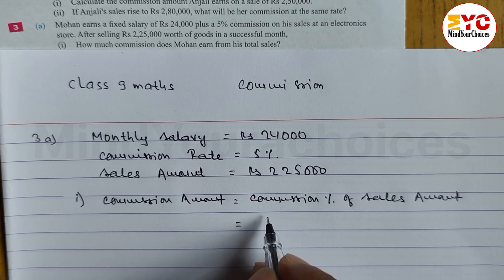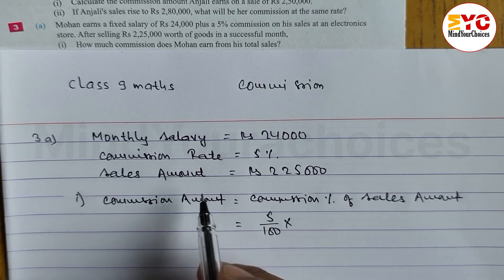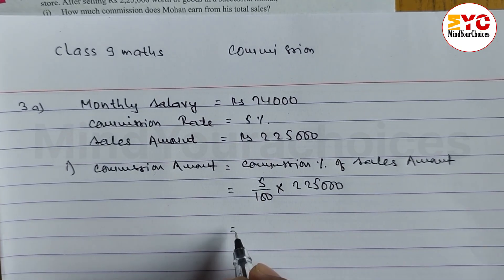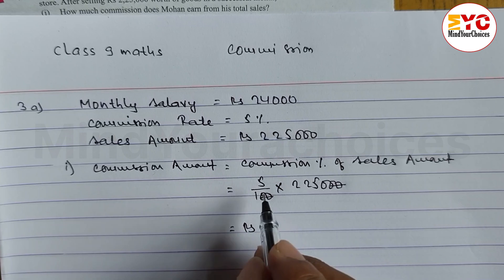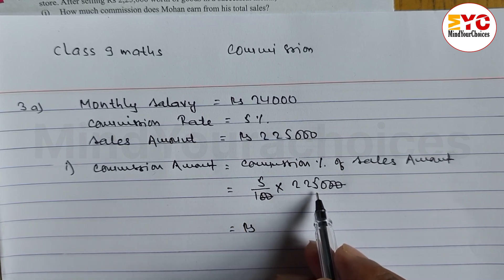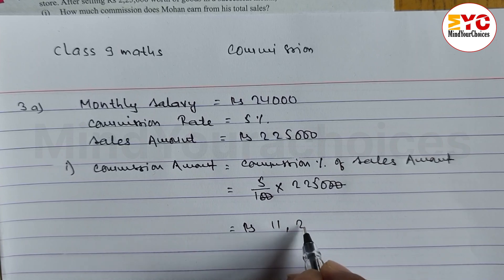Commission percent is 5%, so we can write: 5 divided by 100, into sales amount. Sales amount is equal to 2,25,000. Cancel zeros — 5 into 2,25 — we get here 11,250. So commission amount is equal to Rs. 11,250.